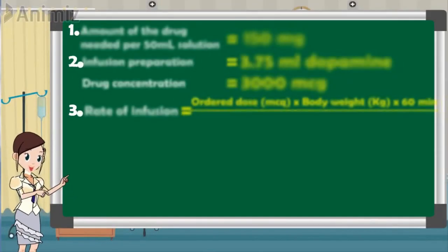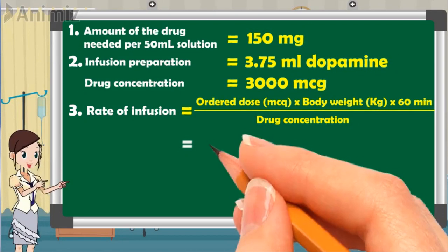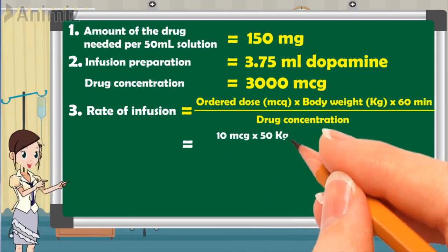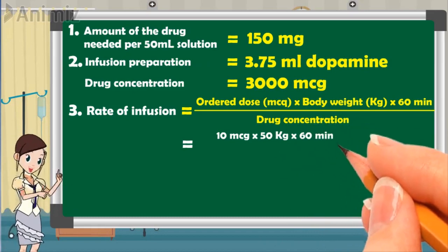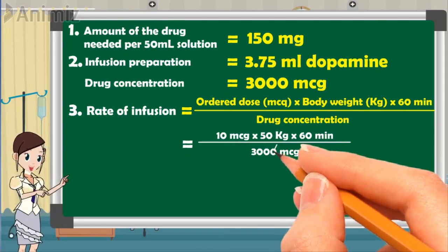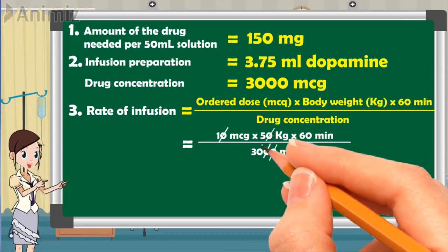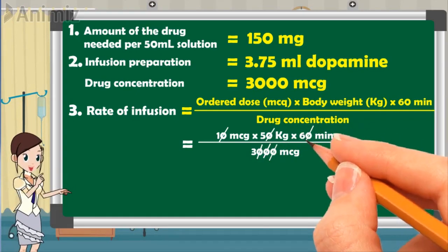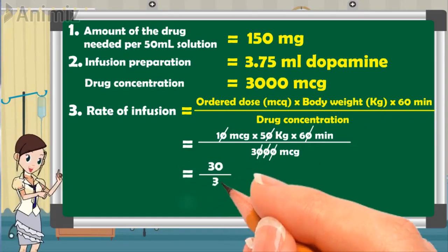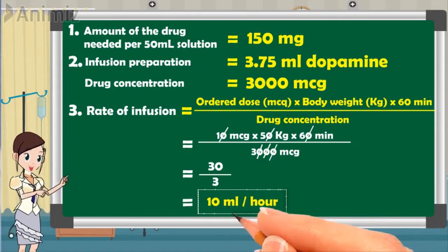Step 3: the rate of infusion per hour equals the ordered dose of 10 micrograms, multiplied by the patient body weight of 50 kilograms, multiplied by 60 minutes, all divided by the drug concentration of 3000 micrograms. Simplifying the numbers, we get 10 milliliters per hour — this is the rate at which dopamine is infused using an infusion pump for case number one.